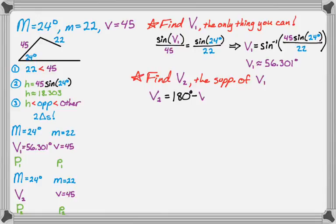So the supplement, V2, is 180 degrees minus V1. And so my calculator tells me it's 123.699 degrees. Let's put that in.